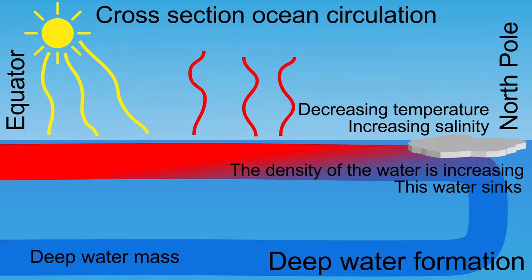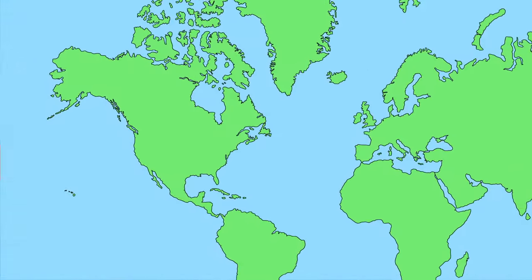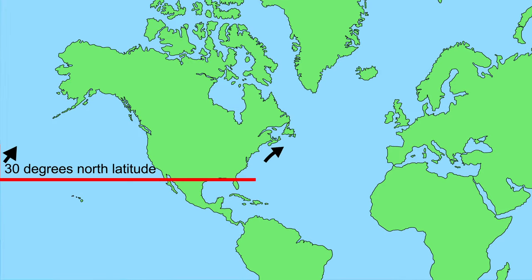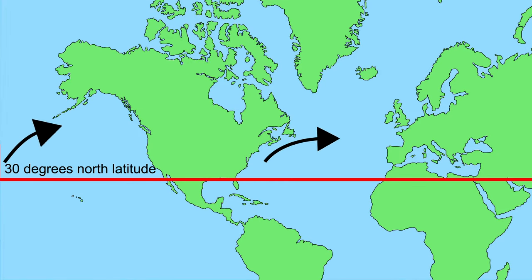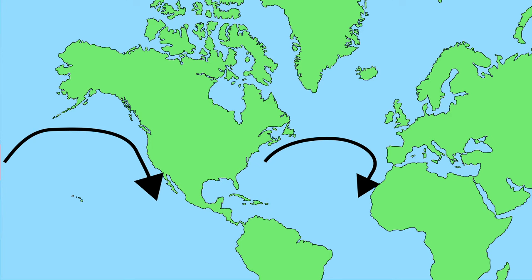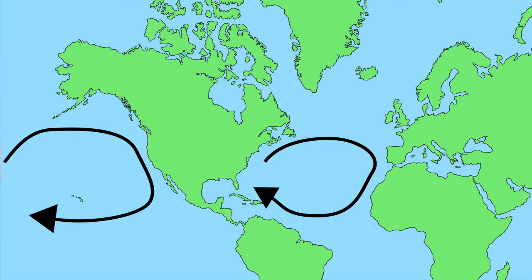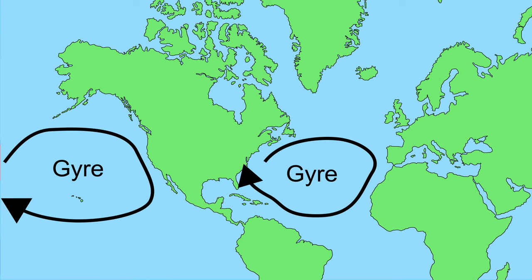The second driver of ocean currents is the wind. Just north of 30 degrees north latitude there is a westerly wind. The seawater on the surface is blown along, but due to the Coriolis effect it deviates to the right, seen from the direction of flow. There it is influenced by the easterly trade winds, creating wind currents from 30 degrees north latitude to the equator. This creates a circular ocean current, also called a gyre.